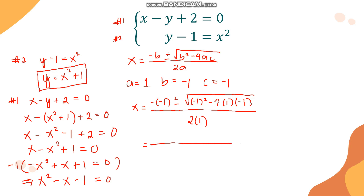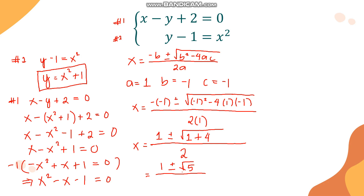Simplifying: positive 1 plus or minus the square root of 1 plus 4, all over 2. This gives x equals 1 plus or minus the square root of 5, all over 2. These are the two values of x: (1 plus √5)/2 and (1 minus √5)/2.